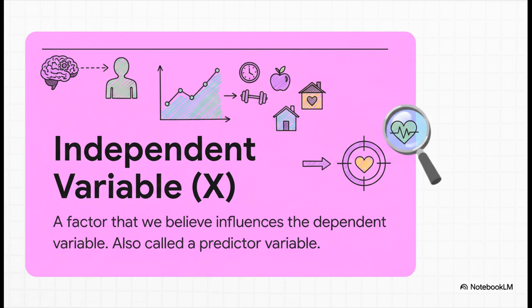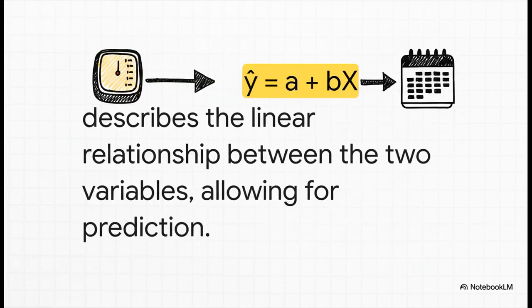And every mystery needs clues. That's our independent variable, or X — the factor that we think has an influence on our outcome. For example, if we're looking at blood pressure, a huge clue researchers look at is a patient's age. This is the potential cause we're using to make our prediction. All of this gets boiled down into the simple regression equation, where Y-hat is the predicted value of our outcome, like blood pressure, and X is our clue, like a person's age.